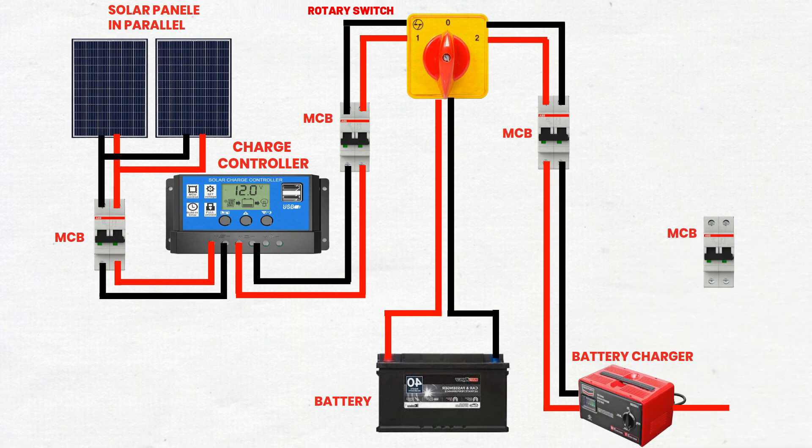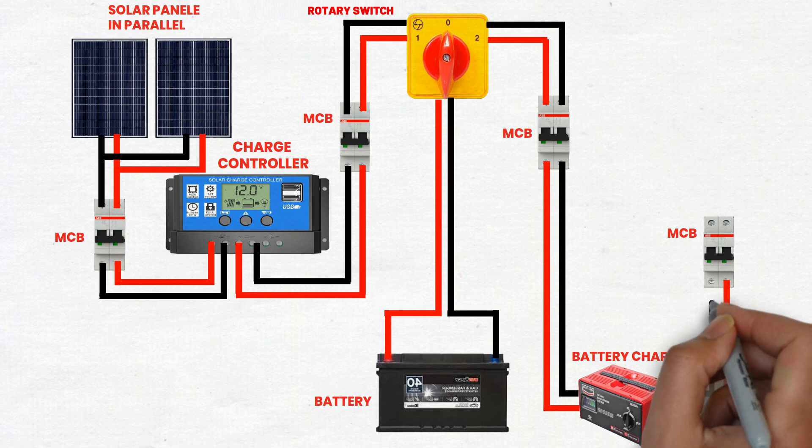Step 8: Connect battery charger to fourth MCB. Run cables from the output terminals of the battery charger to the input terminals of the fourth MCB. This provides protection for the charging circuit.